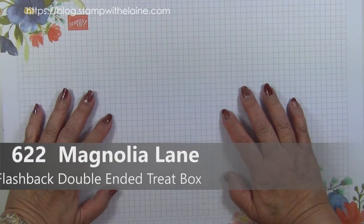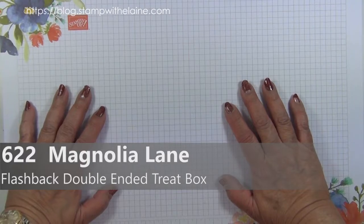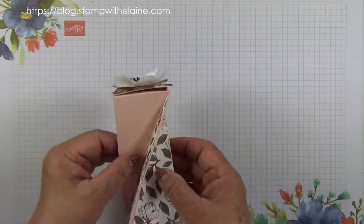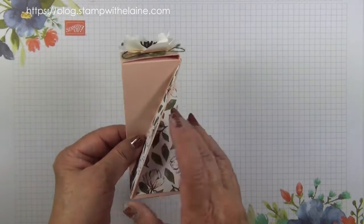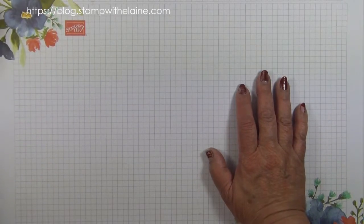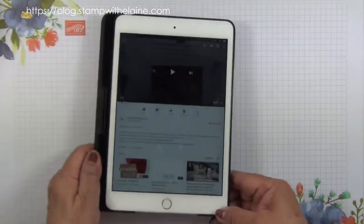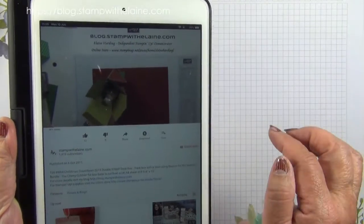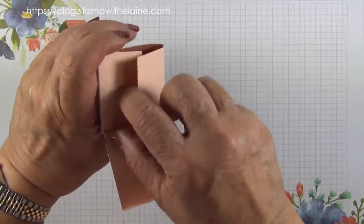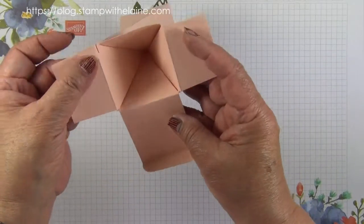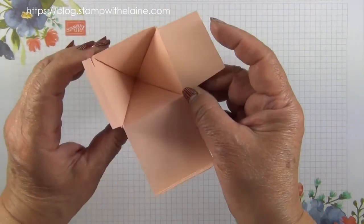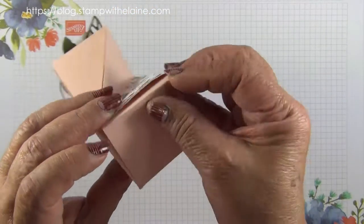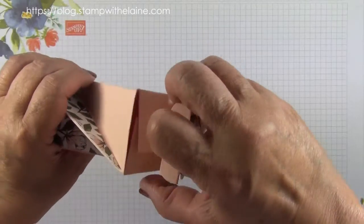Hi, I'm Elaine Harding. Welcome to my blog stampwithelaine.com. I'm calling today's project Flashback Friday because I first made this box in my 2015 countdown to Christmas series. It's a double-ended compartment so you can put a treat in there, and then in the top there's another compartment to put another treat in here.